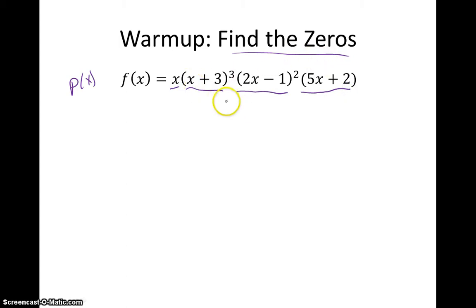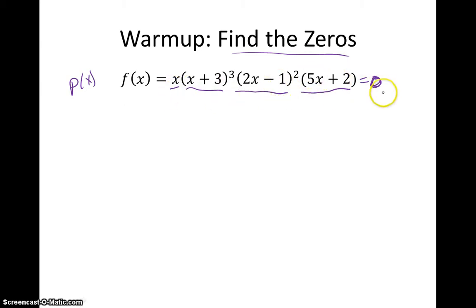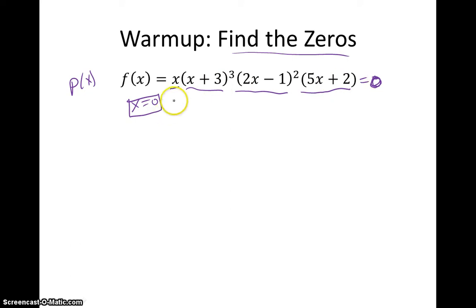So if we want to find the zeros of this polynomial and we're multiplying all these factors together, remember the zeros are just when the polynomial is equal to zero. There's a property you guys learned in advanced algebra called the zero product property that says when I multiply all these things together and they equal zero, the only way that can happen is if one of the things I'm multiplying together is equal to zero. So my options here are x equals zero — that's one solution right away, because that's my first factor. Or x plus 3 could be zero. If x plus 3 is zero, I can subtract 3 from both sides, and that means x is negative 3. So that's my second solution.